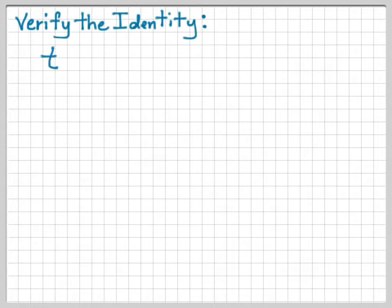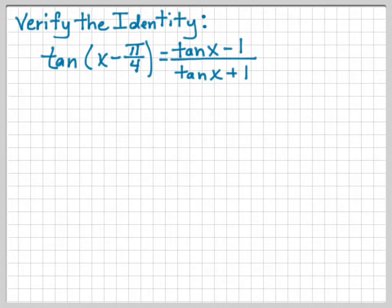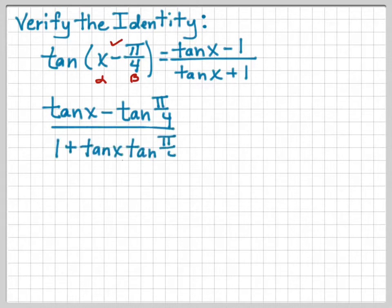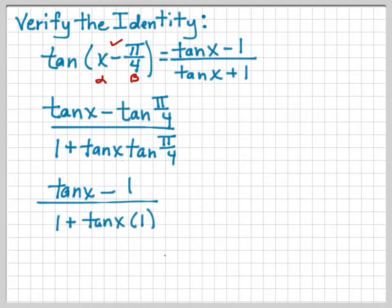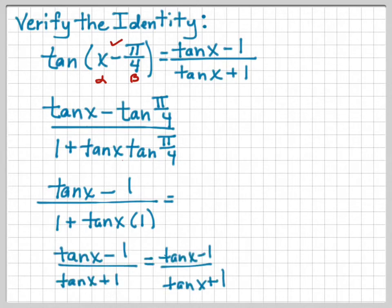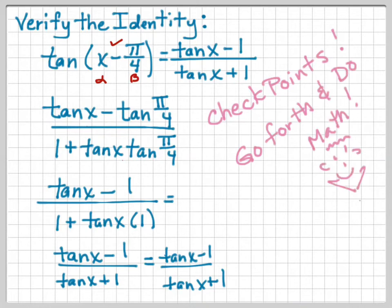To verify this identity: tangent of (x − π/4) equals (tangent x − 1) over (tangent x + 1). I'll work with the left-hand side. Alpha is x, beta is π/4, and it's the difference. So it would be (tangent x minus tangent(π/4)) over (1 plus tangent x times tangent(π/4)). Well, tangent of π/4 is 1, so tangent x minus 1 over 1 plus tangent x times 1 gives me (tangent x − 1) over (tangent x + 1), which is my identity. Do your checkpoints — each checkpoint is going to follow very closely to the example that I've given you. Go forth and do math. I'll see you in class.